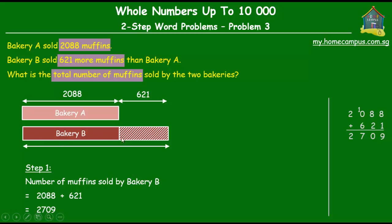So this unit over here, which stands for the number of muffins that Bakery B sold is equal to 2,709. All right. So now we know how many muffins each of the two bakeries sold. So from here, can we find out how many muffins they sold altogether? Well, it's quite simple.